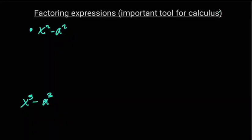In this video we are going to talk about how to factorize some expressions. Let's start with the simple one. In the case you have x squared minus a squared — this is called the difference of two squares — you factorize it as x minus a times x plus a.